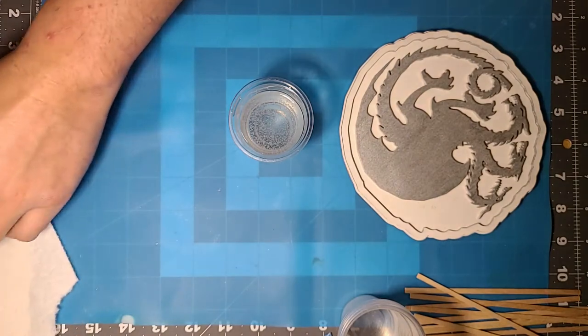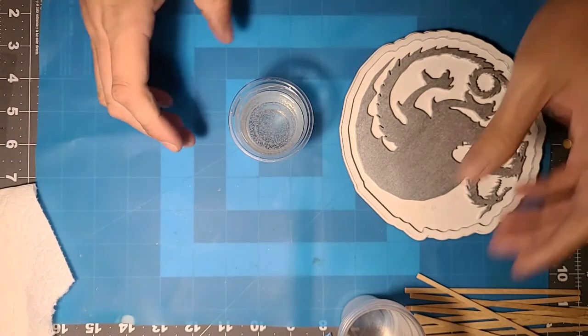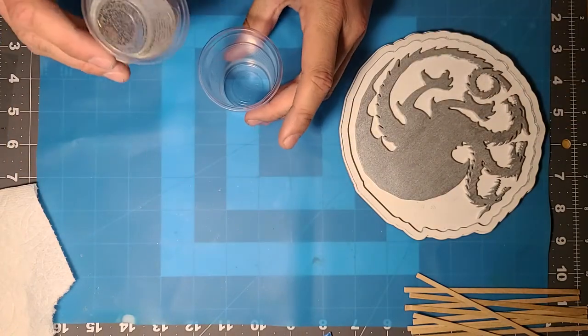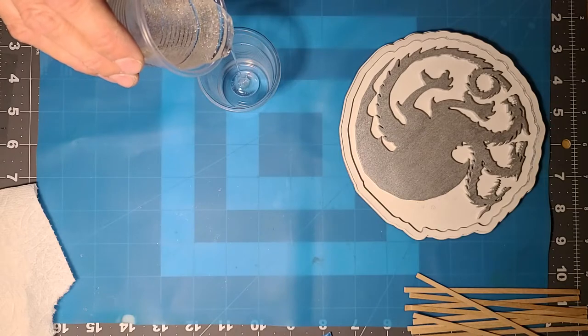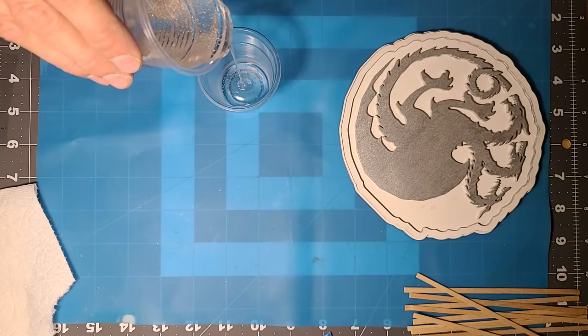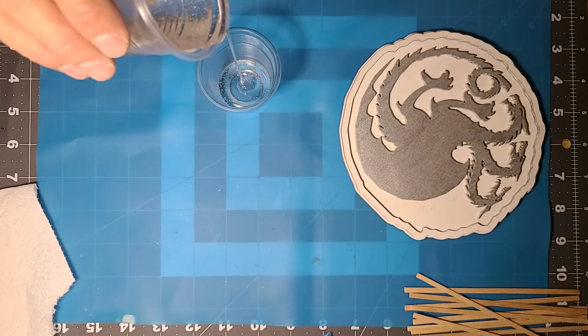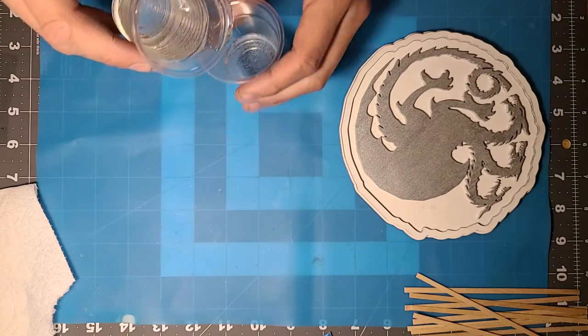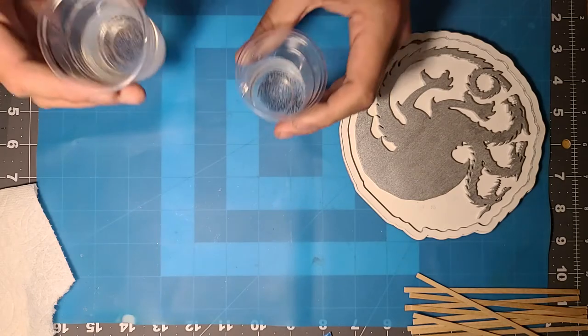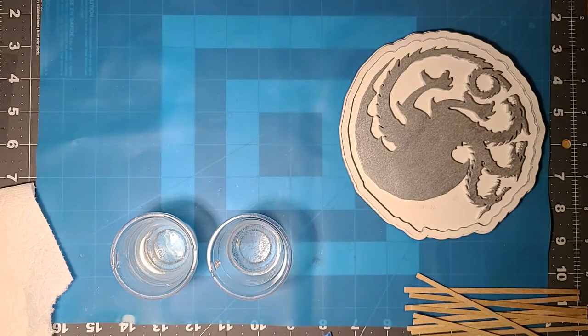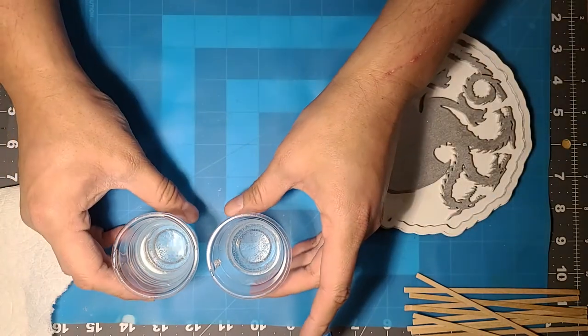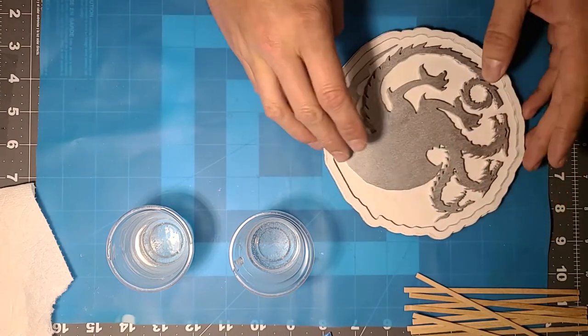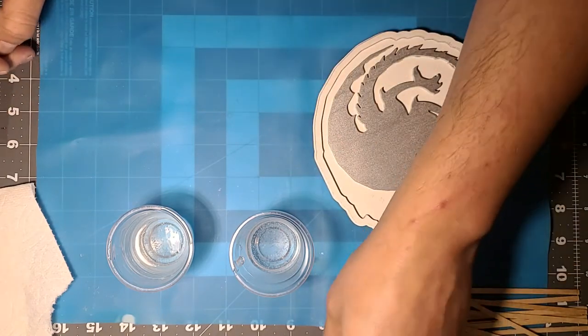All right, that's enough stirring. Let's go ahead and split this up. So, I know I'm not going to use a whole lot of the pearl. So, I'll do about a quarter of this. Definitely not half. That's going to be way too much. Just give it a nice little amount in the other one. Okay. So, we're getting there. Let's go ahead and add some of the coloring to the resin.